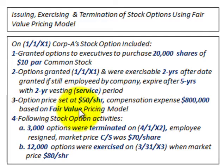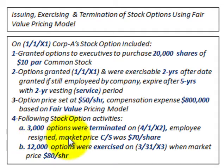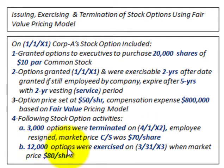That's based on a fair value pricing model. The following stock option activities occurred: 3,000 options were terminated on 4/1/X2, when one of the executives resigned, and the market price on the common stock at that time was $70 per share.